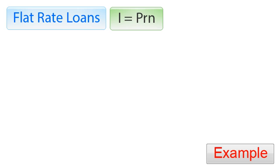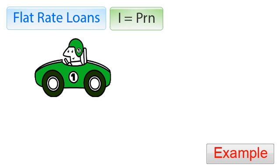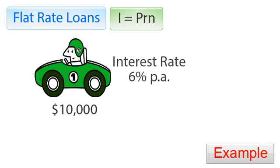Flat rate loans are the same as simple interest loans. You may remember simple interest loans from the formula I equals PRN. For example, a car loan of $10,000 with an interest rate of six percent per annum means that every year you must pay $600 in interest to the bank.